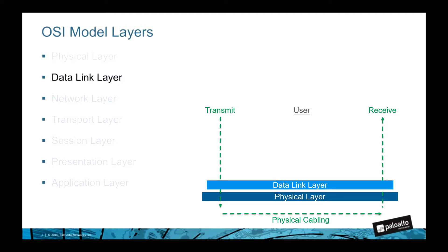The data link layer, or layer two, is responsible for transmission and packages the bits — the ones and zeros — into frames. It's also responsible for physical addressing such as MAC addresses. It can be broken further down into two sub-components: media access control and logical link control.